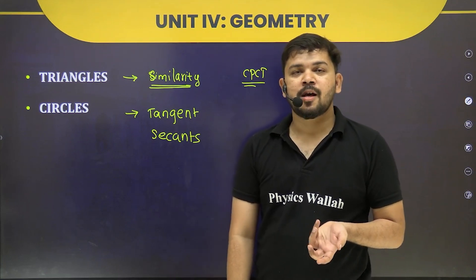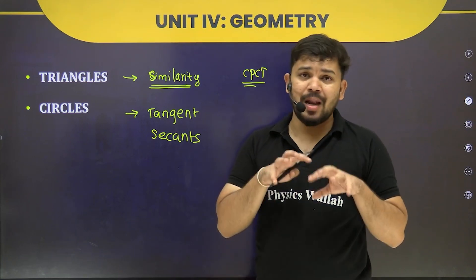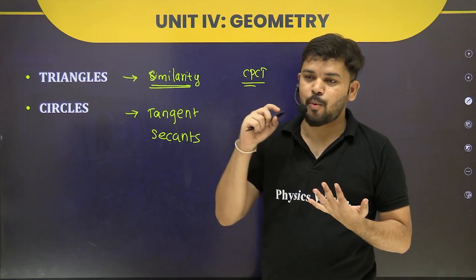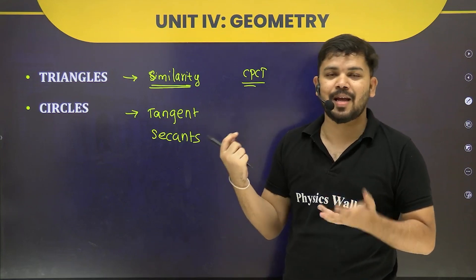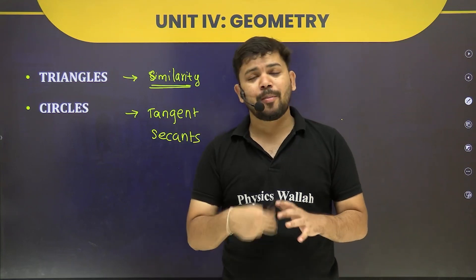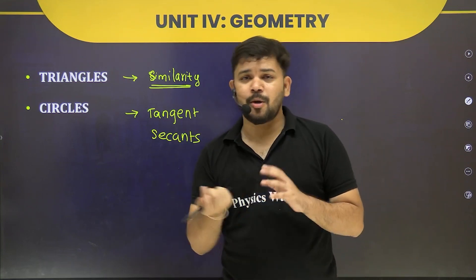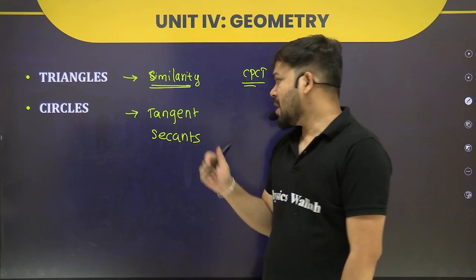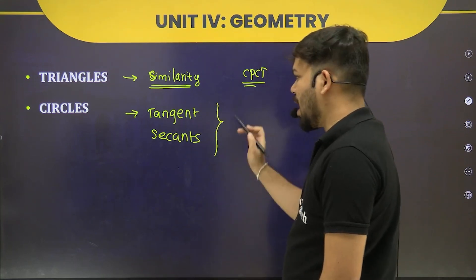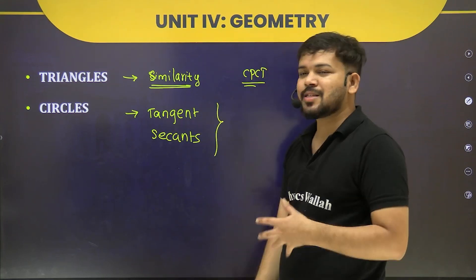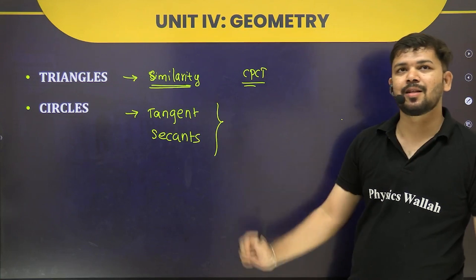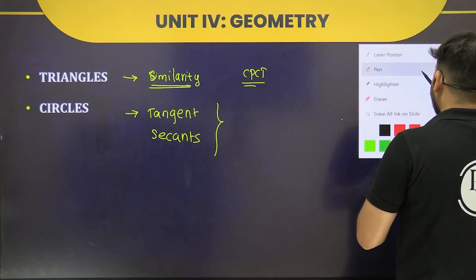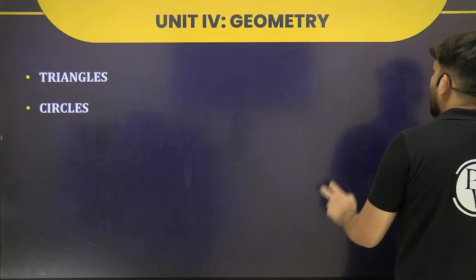In the Circles chapter, we will also cover the relation between a line and a point — the number of tangents possible when a point is outside the circle, inside, or on the circle, and the number of secants possible in each case. All relevant theorems will be discussed.